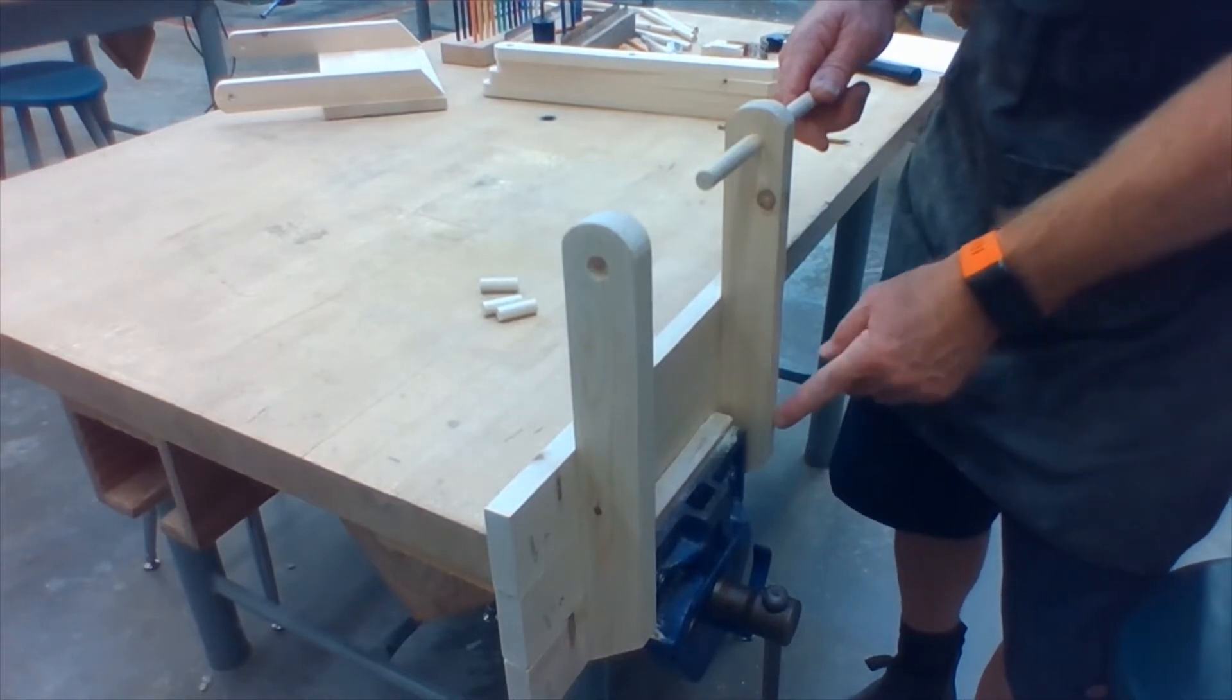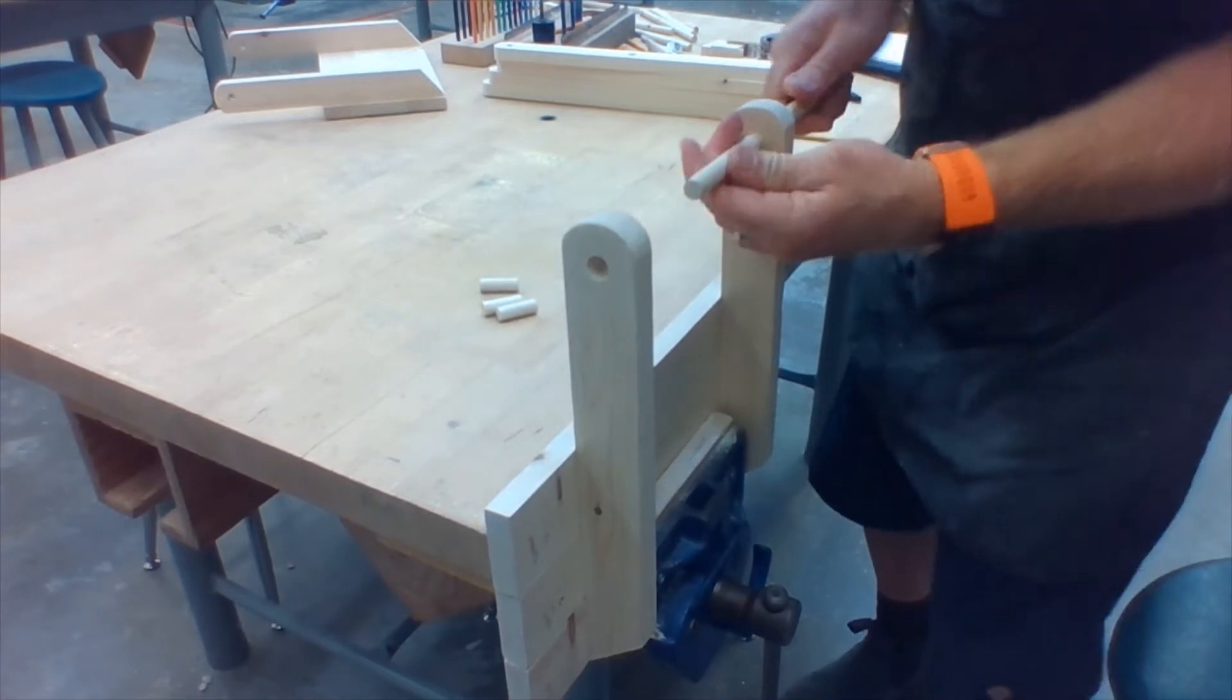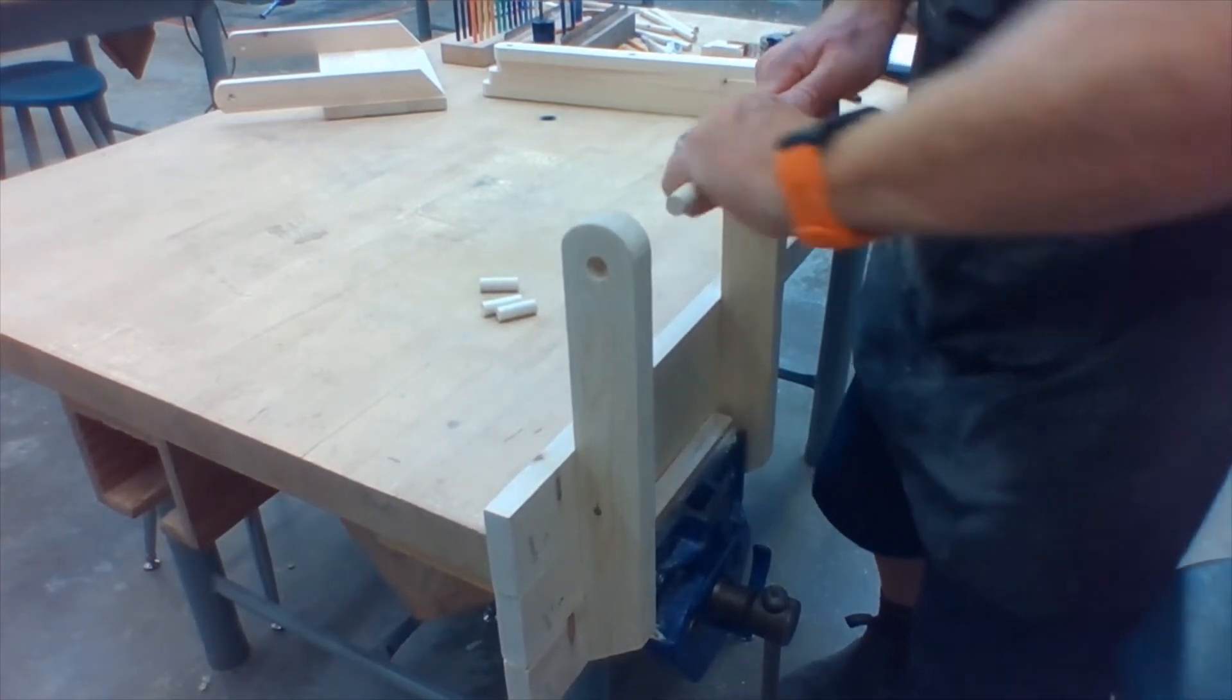You could also put it into the vise so that can hold the seat while you're using both hands to twist and push the dowel through to the other side.